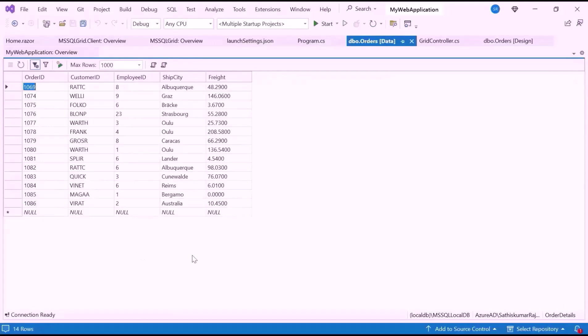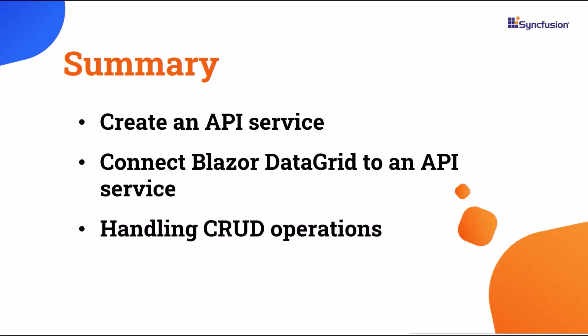If you want to know more about CRUD operations in detail, check the documentation link provided in the description below. Now let me summarize: I showed you how to connect Microsoft SQL Server data to the Syncfusion Blazor DataGrid component and demonstrated how to perform CRUD operations. If you want to see the working code for this example, you can download it from the GitHub link in the description below. I've also provided a link where you can check if you qualify for a free community license to use all our Blazor components. If you find this video helpful, don't forget to click the Like button and subscribe to our channel to watch more videos like this. I'll see you next time.